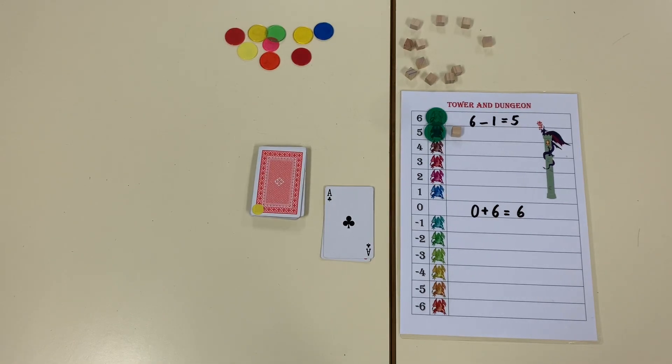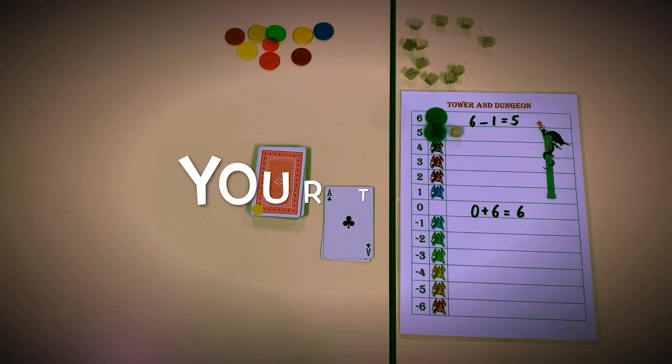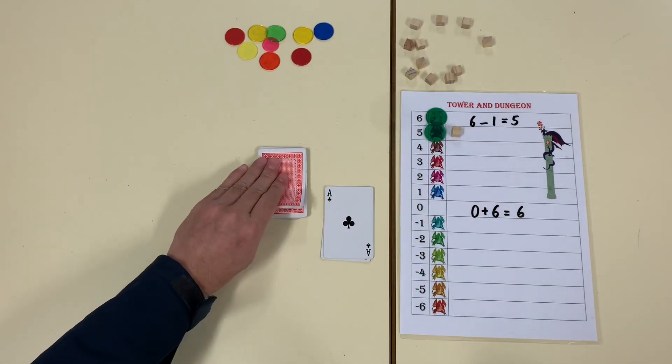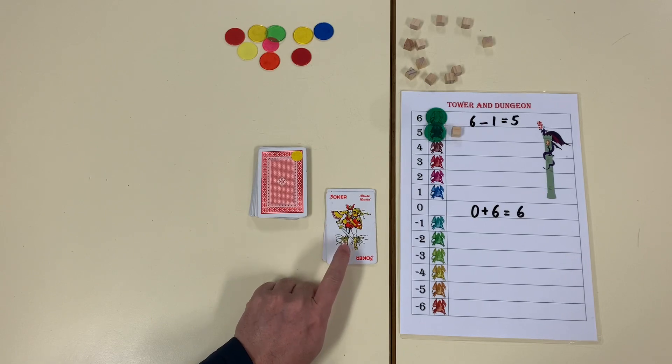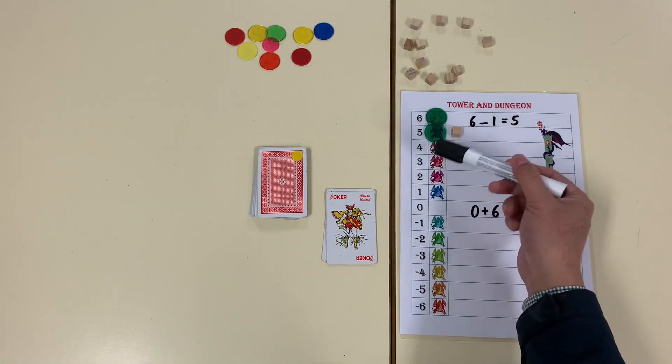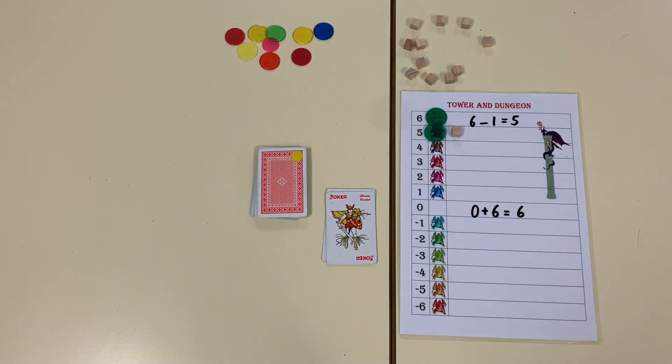It's your turn. You can pause the video. My turn again. Now joker means I can pick any number: one, two, three, four, five, six. So I'm going to pick, let's pick six.